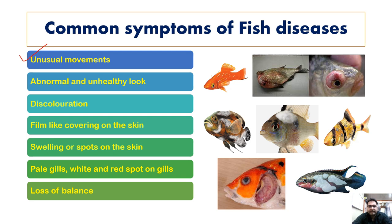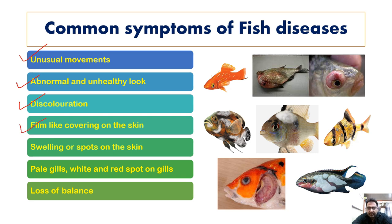Similarly, there are many other signs of disease. If the fish looks abnormal or unhealthy — not shiny or glowing — and there is discoloration, we may guess that something is not right. If there is a film-like covering on the skin, swelling spots on the fish, the fish looks pale, the gills look pale and white, and there are red spots on the gills, and there is loss of balance — these are all warning signs.